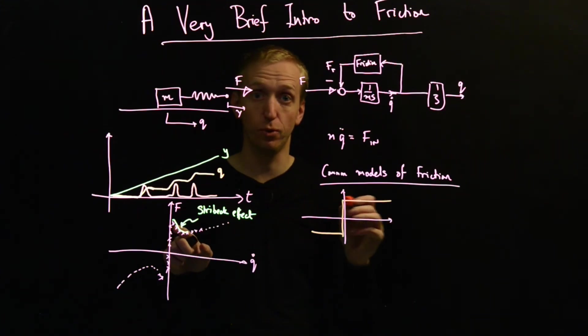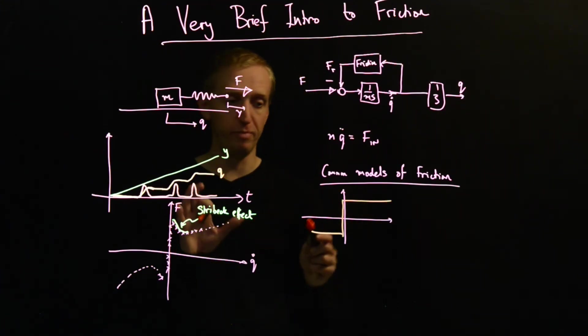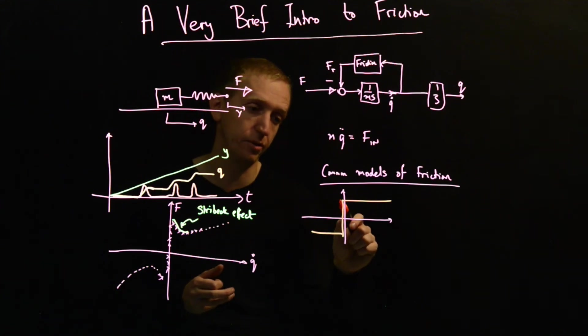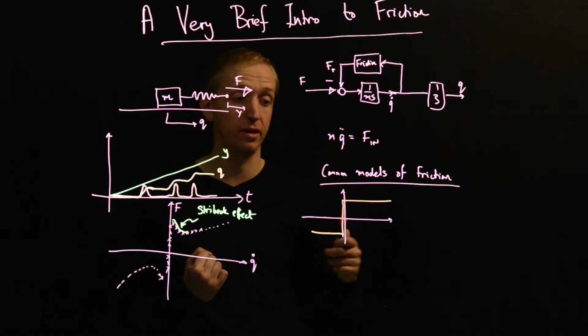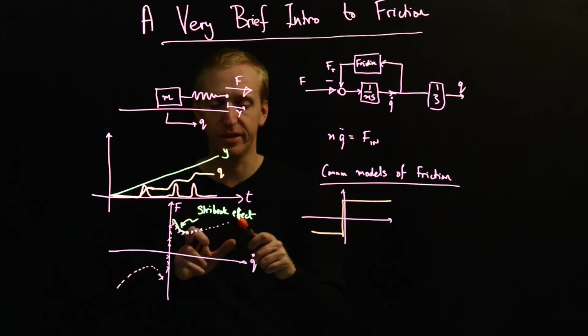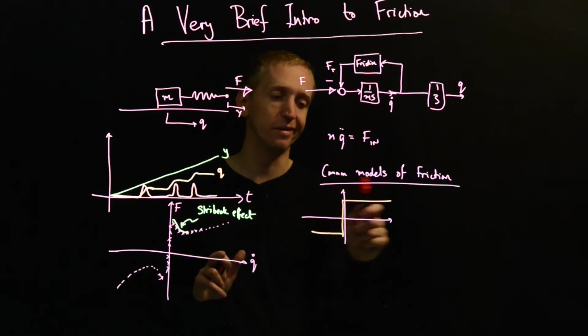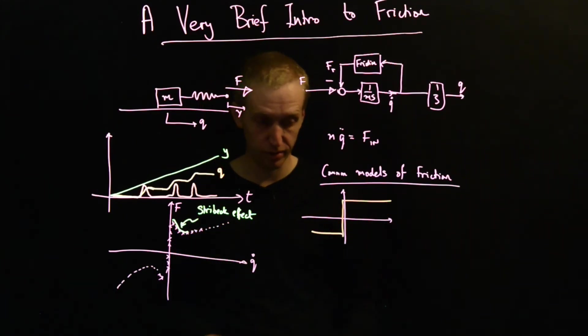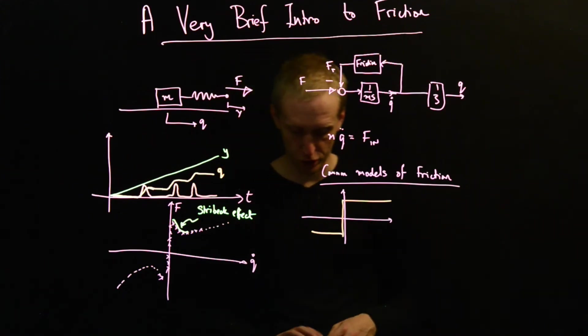So this is missing a number of ingredients. We don't have the Stribeck effect. We don't have this drop off in the friction force as we start to move, and we don't have this tendency to increase again. It's all just approximated away into this relay function here. So this is one such common model.